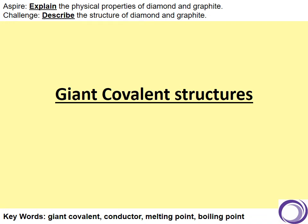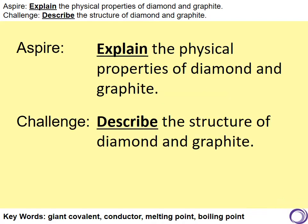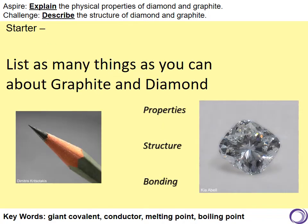Hello, my name is Mrs Kershaw and I am one of the Science Directors with Outward Grange Academies Trust. In today's lesson we're going to take a look at giant covalent structures. Our challenge is going to be to describe the structure of diamond and graphite, and I aspire to explain the physical properties of diamond and graphite. But first of all, as a starter, list as many things as you can about graphite and diamond, focusing in particular on the properties and the structure.